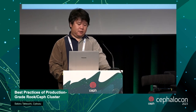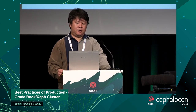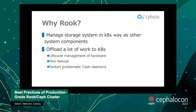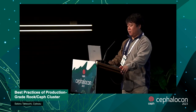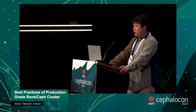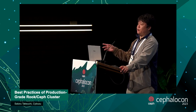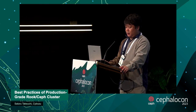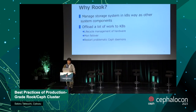We want to manage our storage system in a Kubernetes-native way together with other system components. Our infrastructure is on top of Kubernetes, so we also want to manage storage hardware on top of Kubernetes. By using Rook and Kubernetes, we can offload a lot of work to Kubernetes — like lifecycle management of hardware, failover, and restarting problematic Ceph daemons like OSDs.